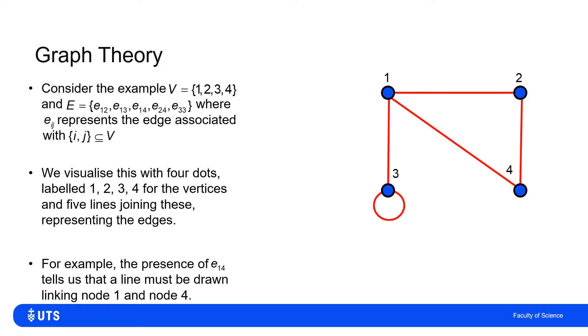So I could visualize that simple graph of V being 1, 2, 3, 4, and E being E1,2, E1,3, E1,4, E2,4, and E3,3 via this simple diagram.